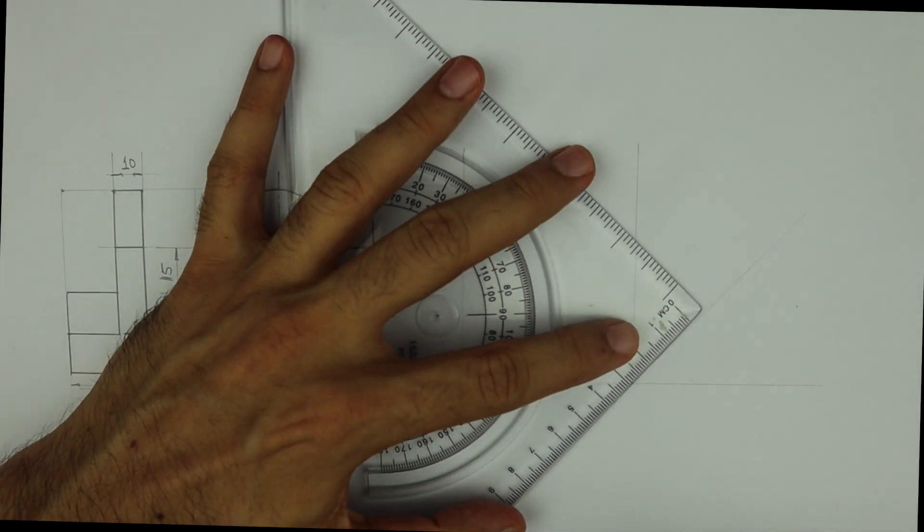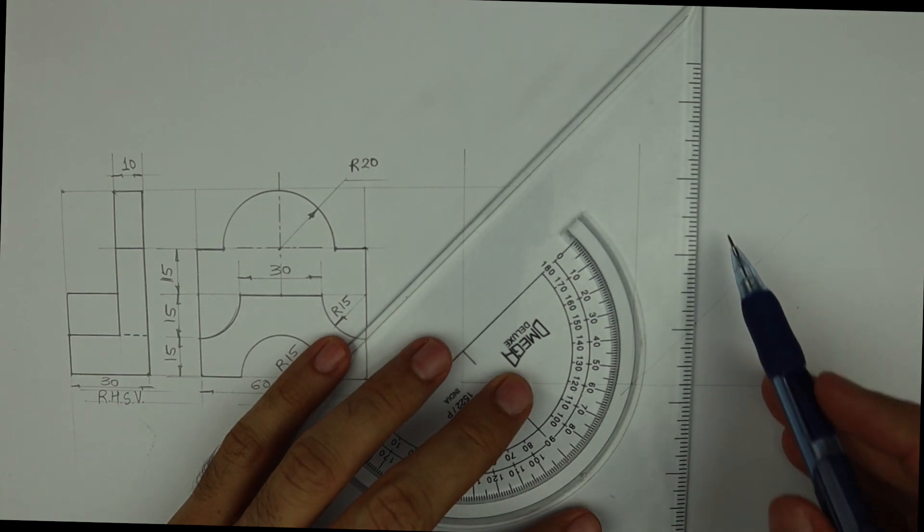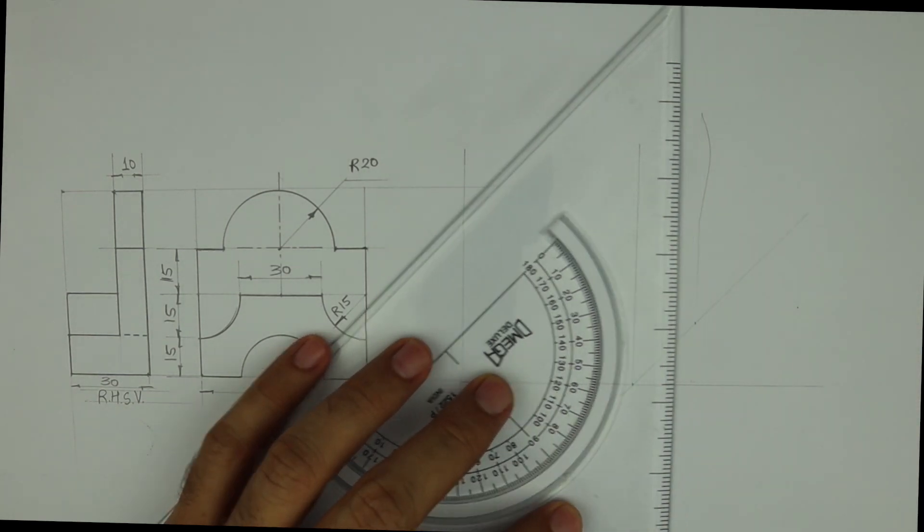Right. Width is how much? 30. So I have taken 45 degree as receding angle.